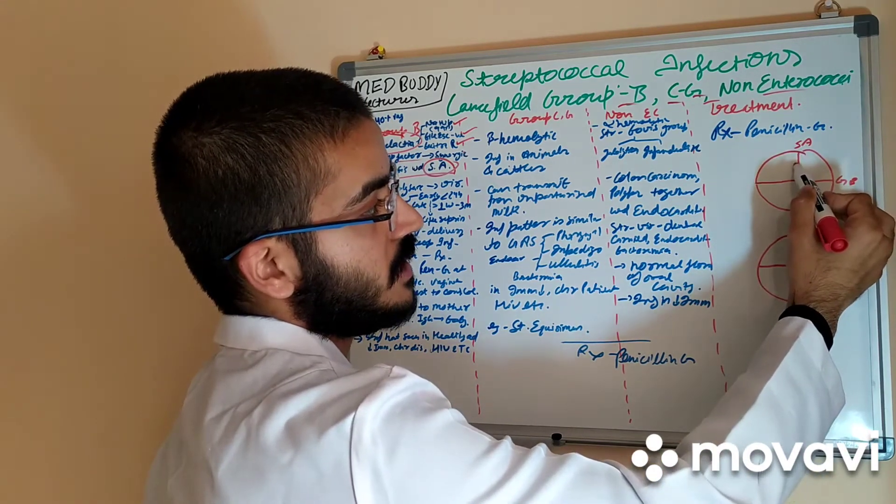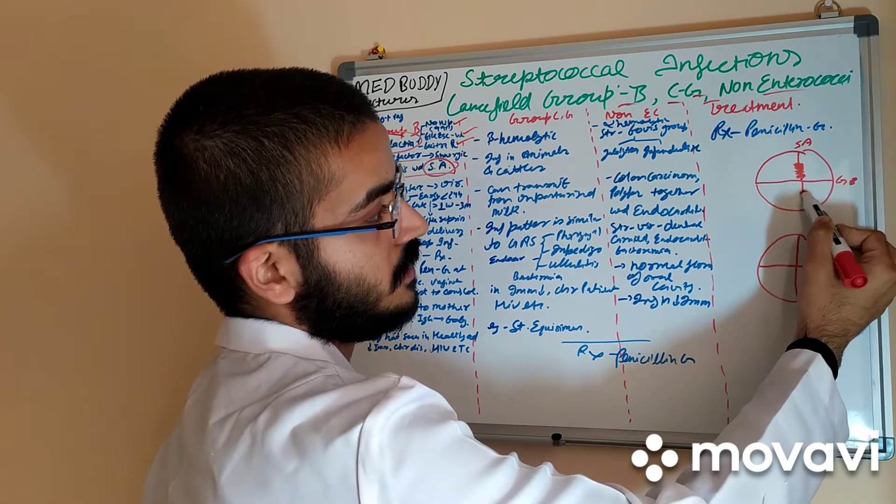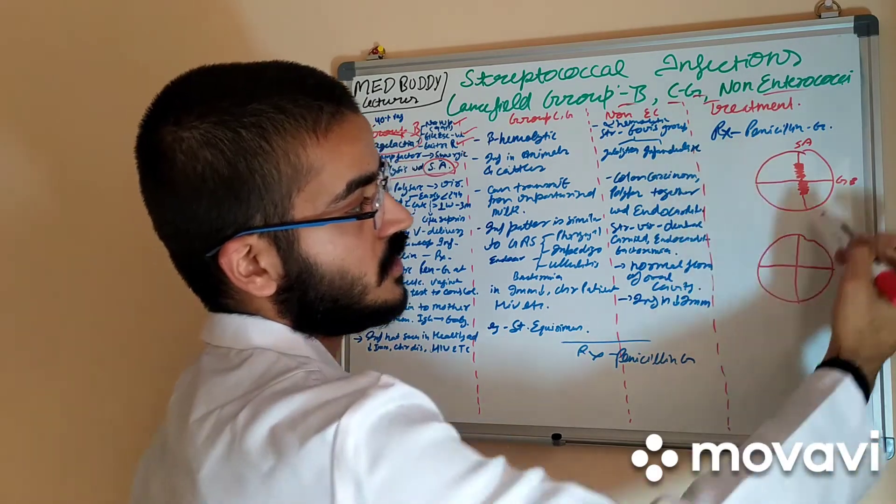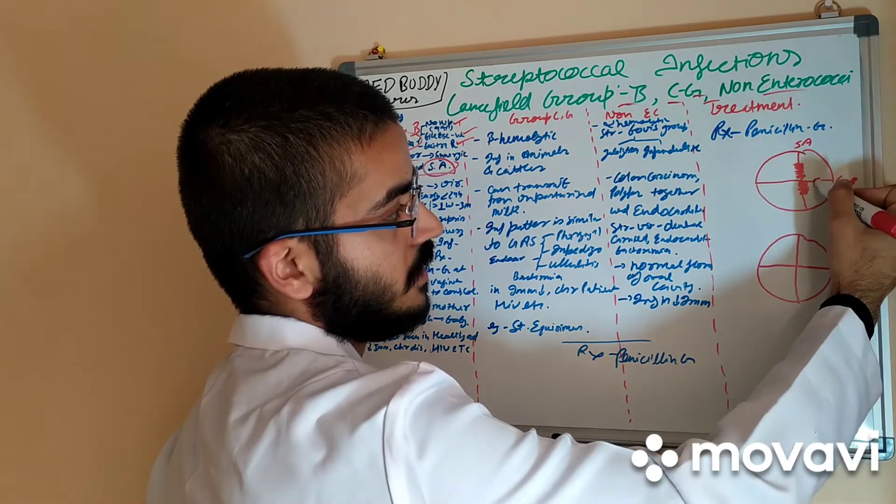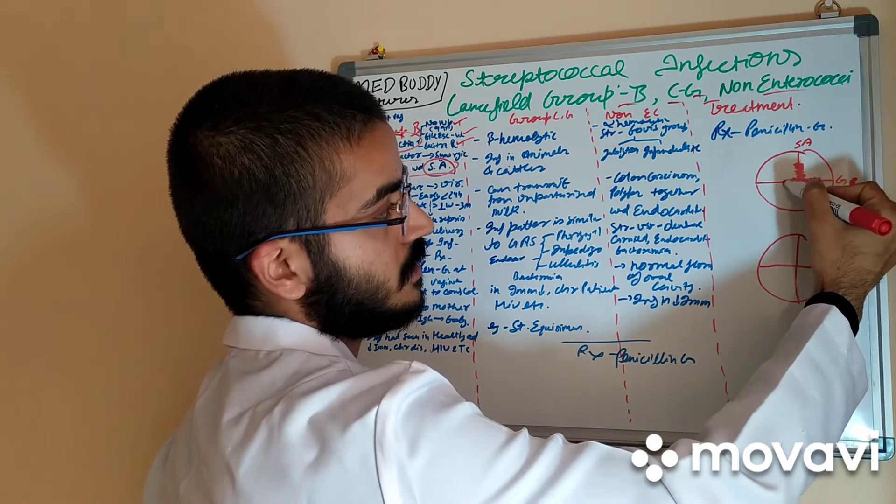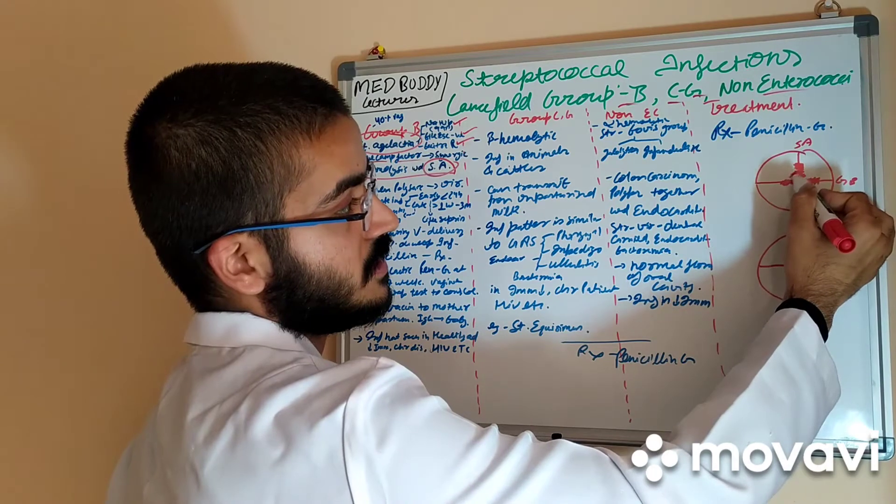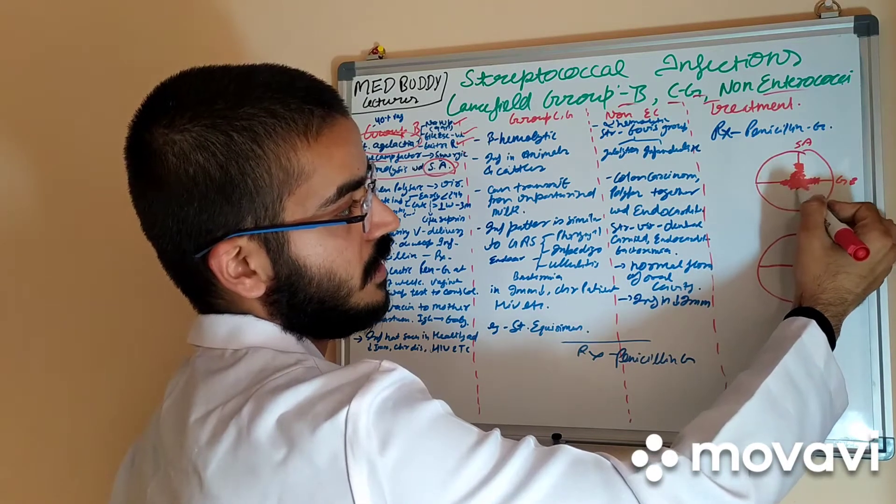Now this forms synergistic beta hemolysis, means it is staph aureus, it is group B. Which means hemolysis will be done by staph aureus like this. Also by group B bacteria like this, and there will be synergistic formation in the center which means it will be visible like this.